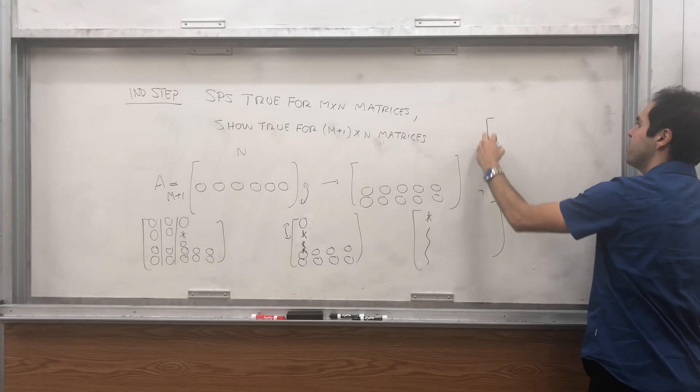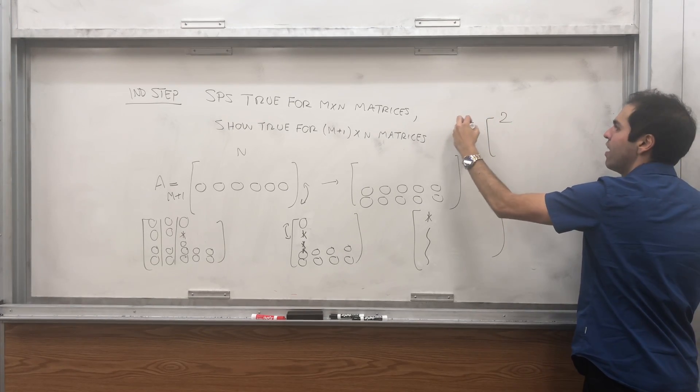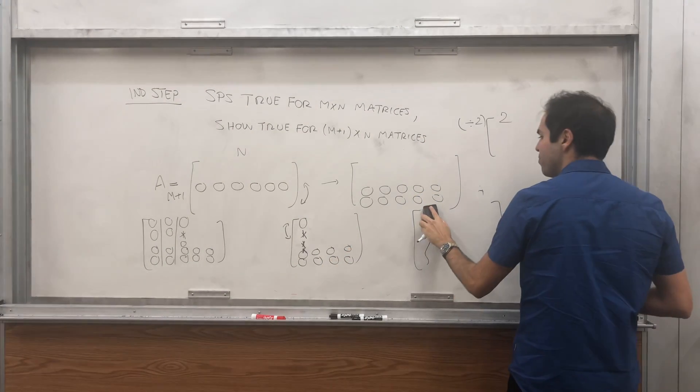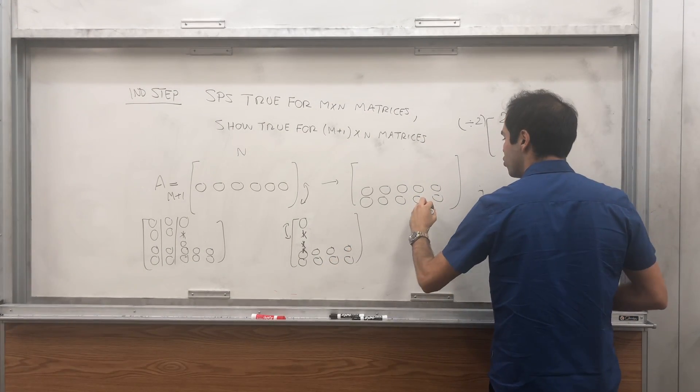Then we get something that's non-zero and then maybe some chunk. And then, because this is non-zero, we can divide by itself. So if you have something of the form two, divide it by two and make this one.